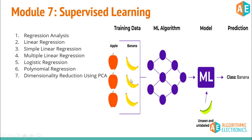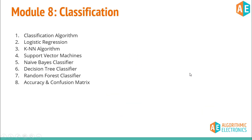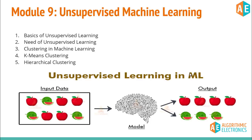In supervised machine learning, you have a labeled dataset. For example, apples and bananas labeled accordingly are used to train the model. After training, an unseen or unlabeled object is given to the model, and the algorithm predicts the accurate label or class — for example, predicting 'banana'. These algorithms will be covered in modules seven and eight.